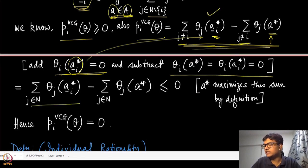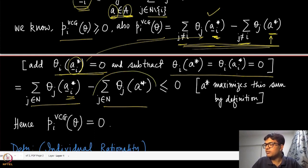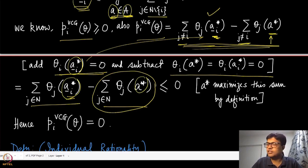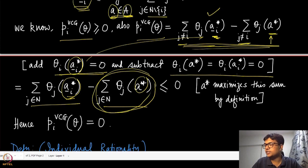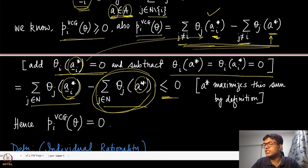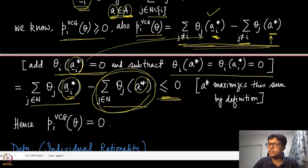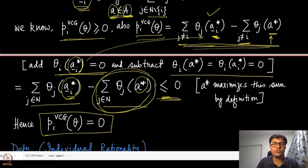Combining these terms, we get the sum of valuations of all agents including agent i under A-minus-i-star, minus the same sum under A-star. Since A-star by definition maximizes the sum of all agents' valuations, any other allocation has a sum that is at most as large — so this difference is non-positive. We have shown pi_VCG is non-negative and now shown it is non-positive, so it must equal zero. This completes the proof.